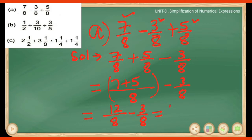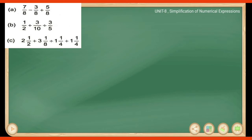So the result is 9/8. If we convert this to a mixed number, it becomes 1 and 1/8. This is the way we solve part A.